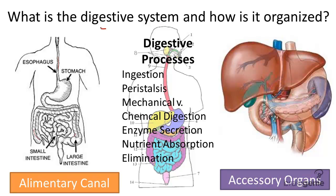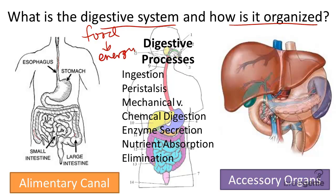So what is the digestive system and how is it organized? Well, the purpose of the digestive system is digestion — to break down food into smaller pieces for use by all cells in the body. The digestive system is broken down into two major parts: the alimentary canal and the accessory organs.